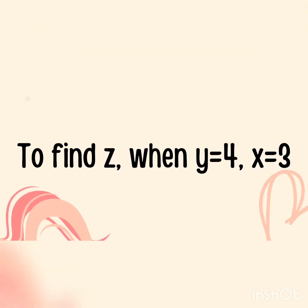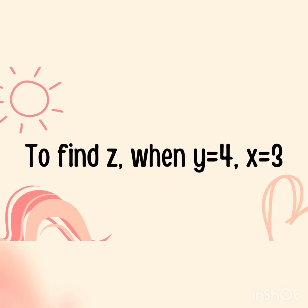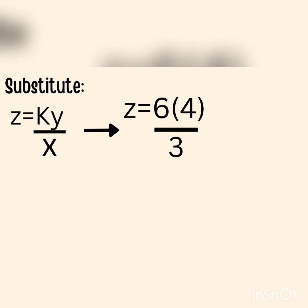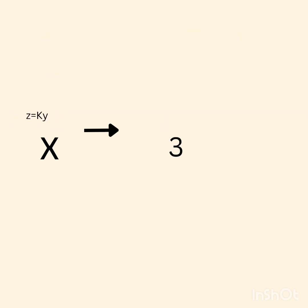Now, to find z when y equals 4 and x equals 3, all you have to do is substitute. The formula will be z equals ky over x since we're finding z. Then, substitute: z equals 6 times 4 over 3.